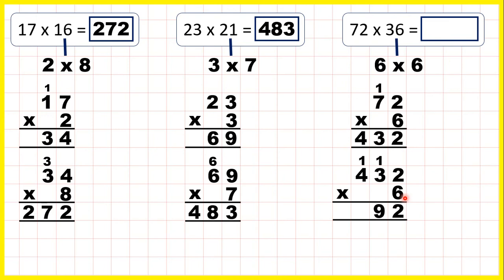And 4 times 6 is 24. Plus 1 is 25. So 72 times 36 is 2,592.